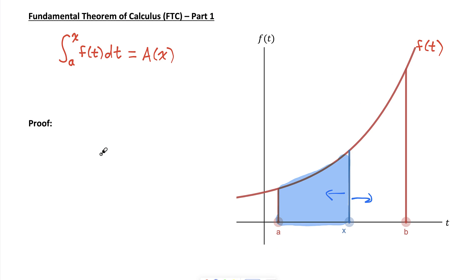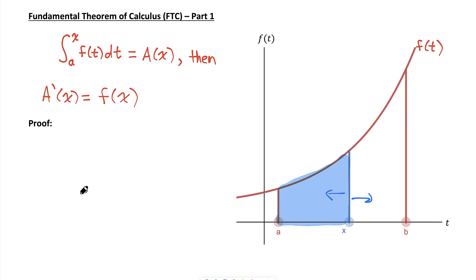Here's the important part of the fundamental theorem of calculus. If we define the integral from a to x of f of t dt as A of x, then the derivative of A of x — so A prime of x — is equal to f of x. That's the important part. It essentially states that integrals and derivatives are inverse operations of each other. So if we have an integral between a constant and the variable x, we can find the derivative of that just by replacing our dummy variable t with x.